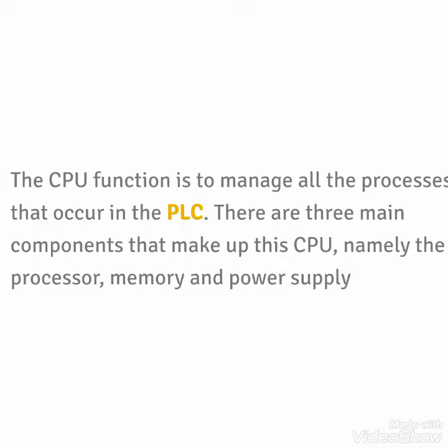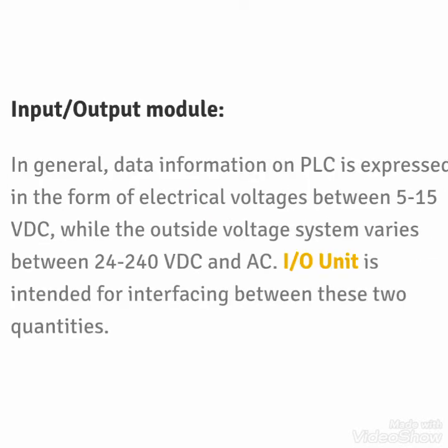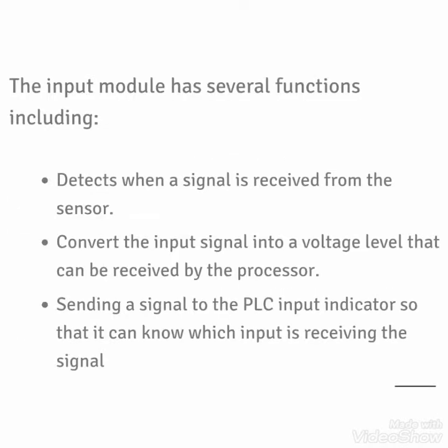For input/output modules, data information on the PLC is expressed in the form of electrical voltage between 5 to 15 volt DC, while the outside voltage system varies between 24 to 240 volt DC and AC. The input/output unit is intended for interfacing between these two quantities.